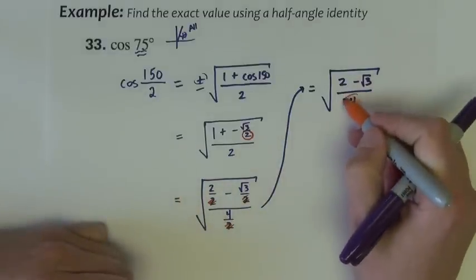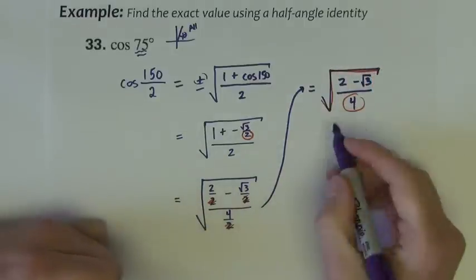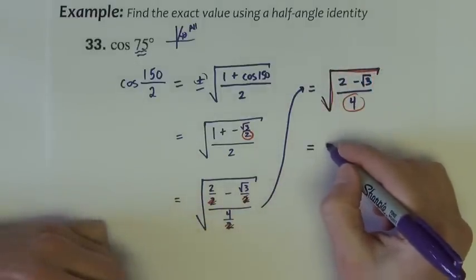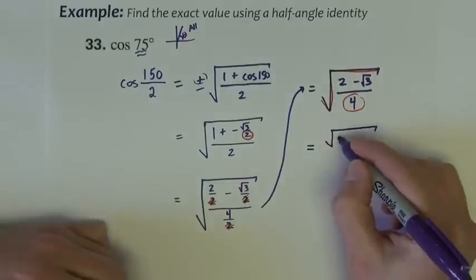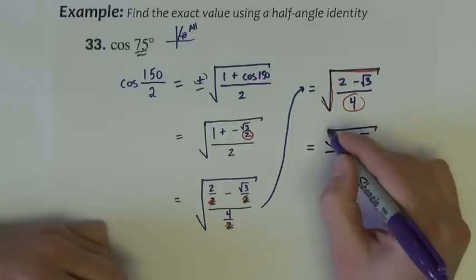This 4, since it's underneath the square root, is going to come out. The result is square root of 2 minus square root of 3 over 2.